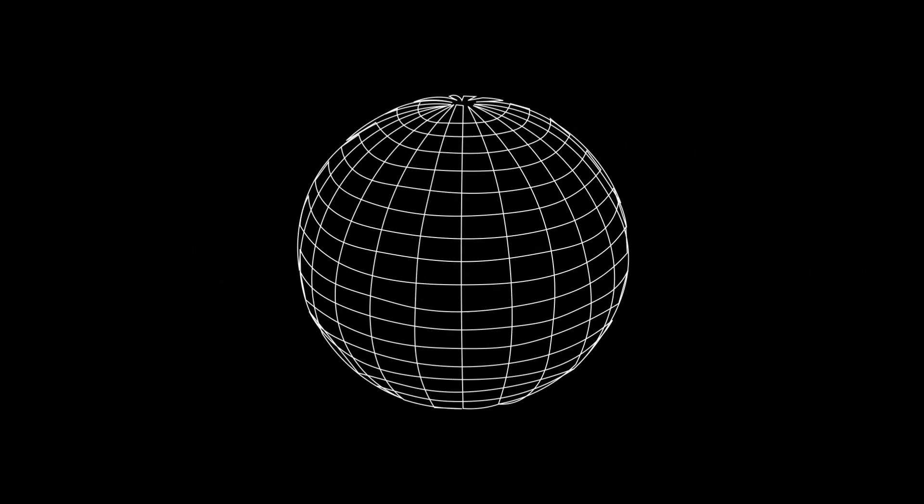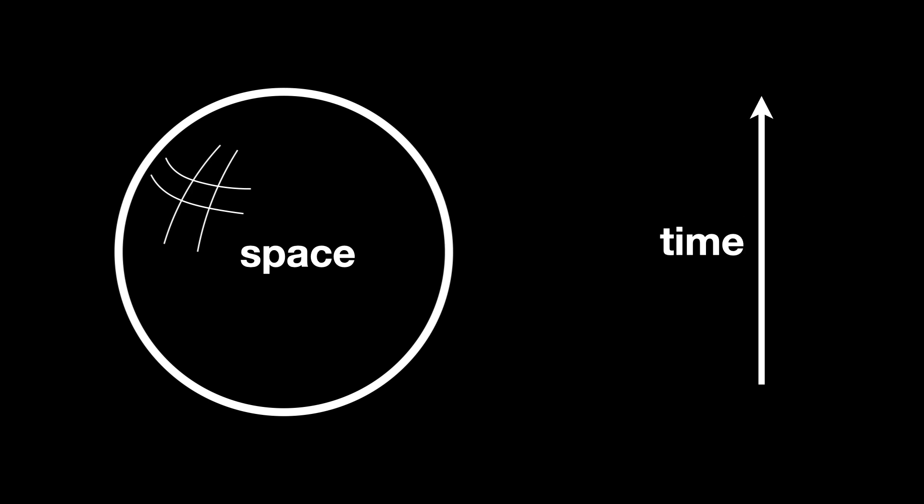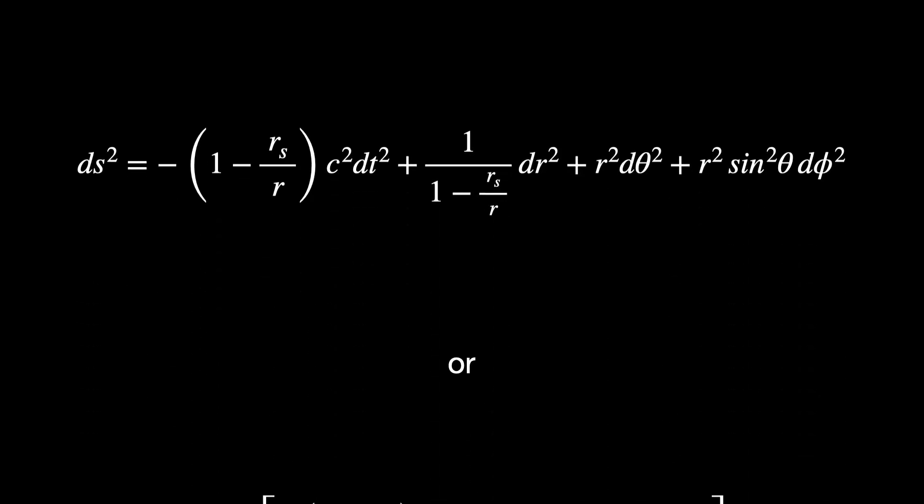In the specific case of general relativity, this manifold is four-dimensional such that three dimensions represent space and one represents time. So each input or solution of Einstein's equation gives a different output or geometry of space-time.